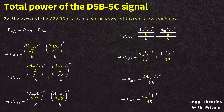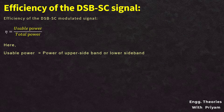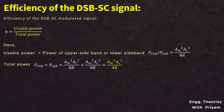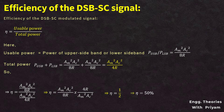Now let us calculate the efficiency of the DSBSC modulated signal. Efficiency η = usable power / total power. The usable power (P_USB or P_LSB) = AM²·AC²/(8R), and the total power PST = AM²·AC²/(4R). Therefore η = [AM²·AC²/(8R)] / [AM²·AC²/(4R)] = 1/2, or η = 50%. So the efficiency of the DSBSC modulated signal is 50%.